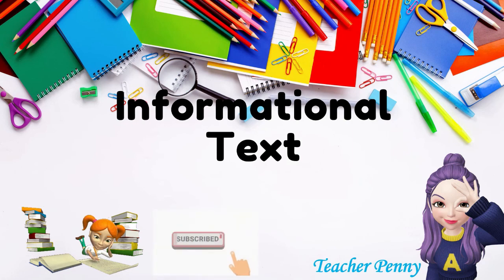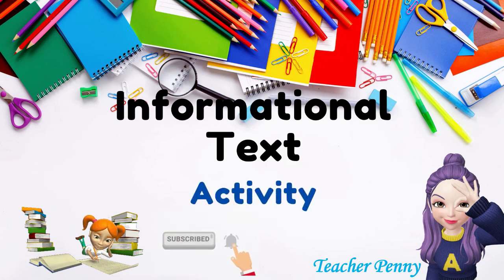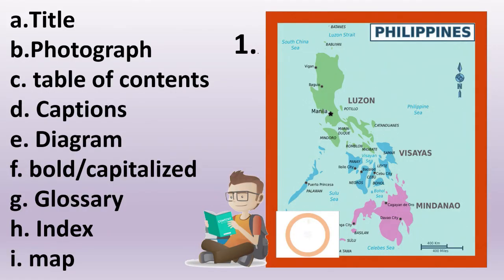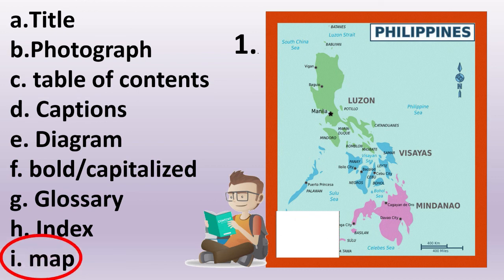Let's try this activity for the informational text. For number 1, what is the feature of informational text that is shown in the picture? What is your answer? The correct answer is Map.